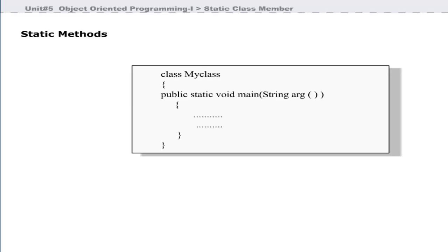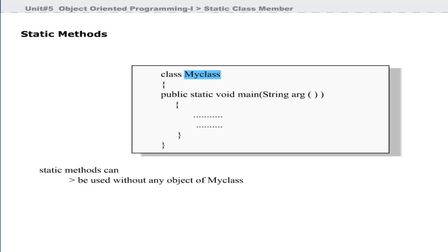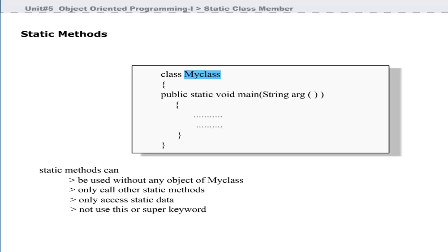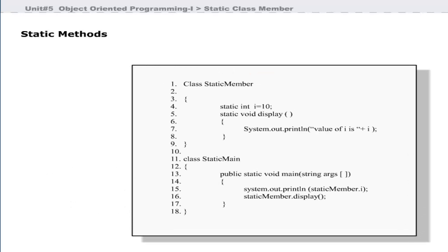Static methods are declared using the static keyword. The main method, which we have been using throughout our examples, is a static method and is used before any object of that class is created. Static methods can only call other static methods, can only access static data, and cannot use the this or super keywords. This example demonstrates a static method: line 5 declares a static method, which is called in the main method at line 16. Static methods can be called without an object, using just the class name.